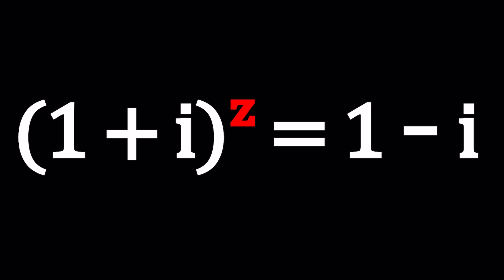Alright, anyways, we have 1 plus I to the power of Z. Z is a complex number and we get 1 minus I. Now, how are 1 plus I and 1 minus I related? Well, they're conjugates.